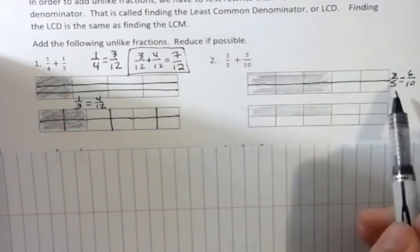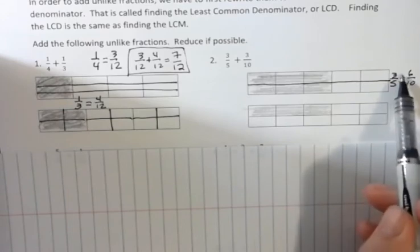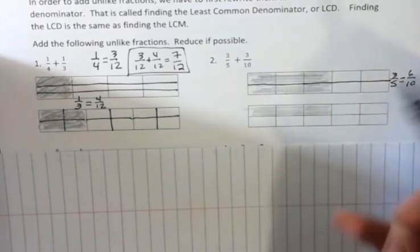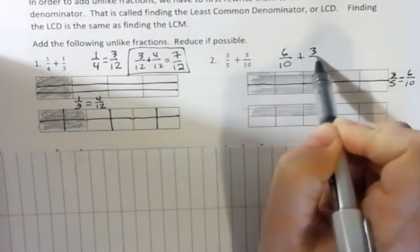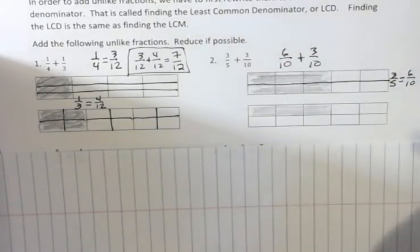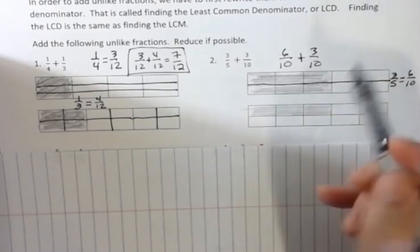And you remember, we know that 5 times 2 is 10, 3 times 2 is 6, so that makes sense. So, what I have is 6 tenths plus 3 tenths. Notice I didn't change the tenths, because it already had the right number in the denominator.